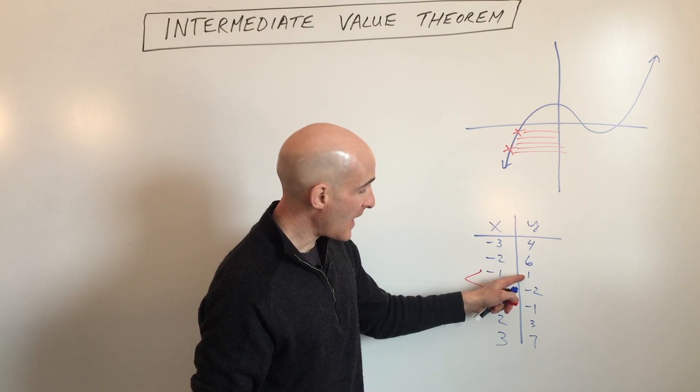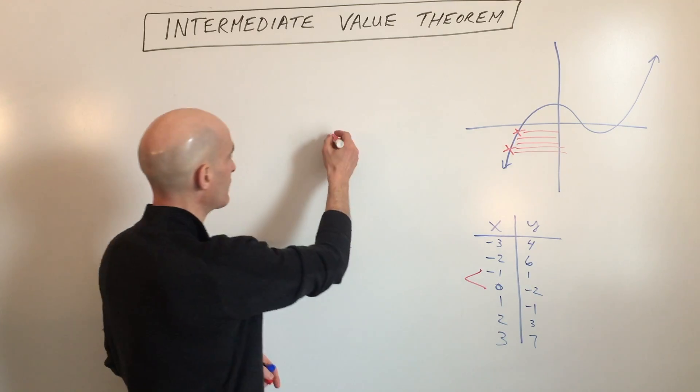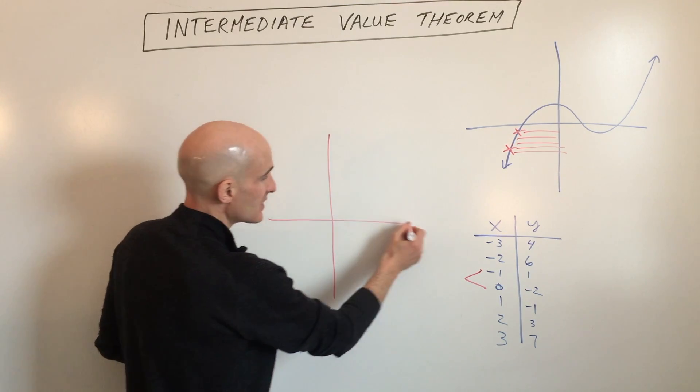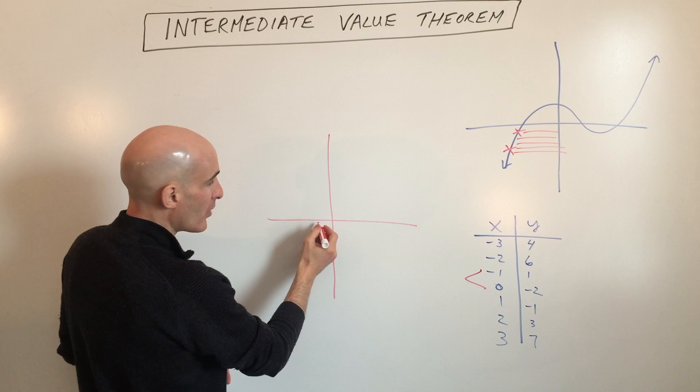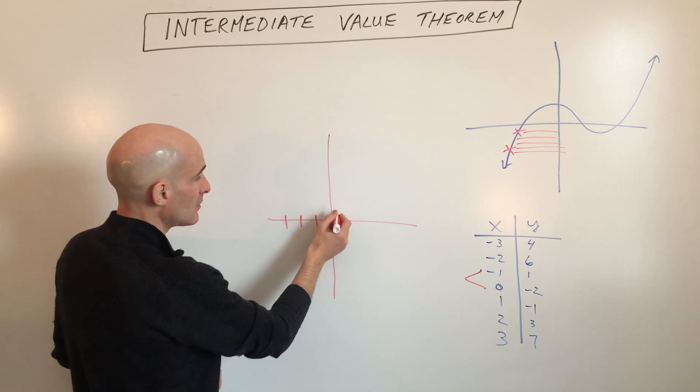Well, the graph had to go from positive one to negative two. Let's draw a graph of that to get a sense of this. So if we were to plot these points, let's see: negative three, one, two, three, four. That would be right up here.